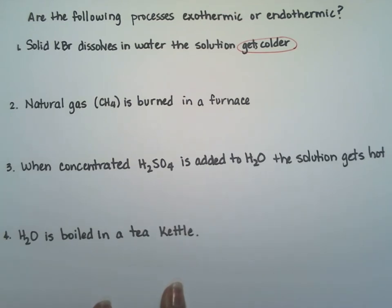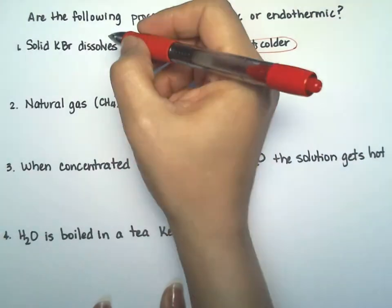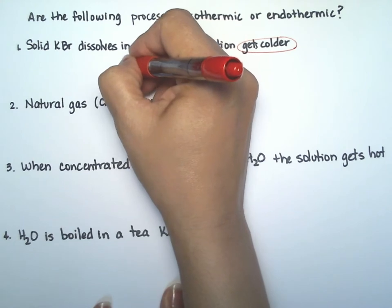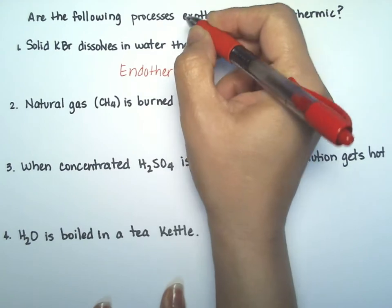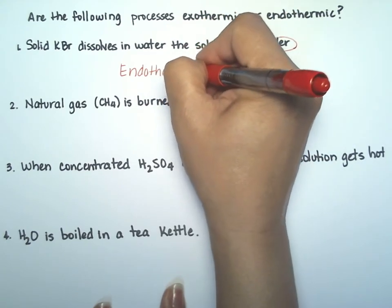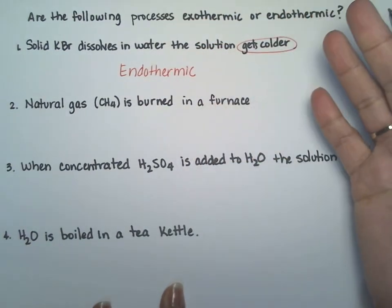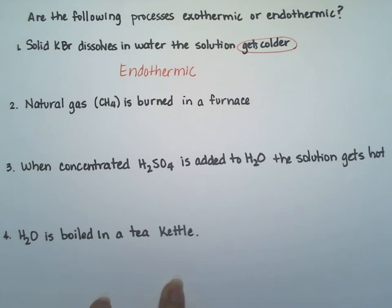So whenever you dissolve a salt in water and it gets colder, that reaction is endothermic. It's absorbing energy, heat. And that's why the final temperature is lower than the initial temperature.